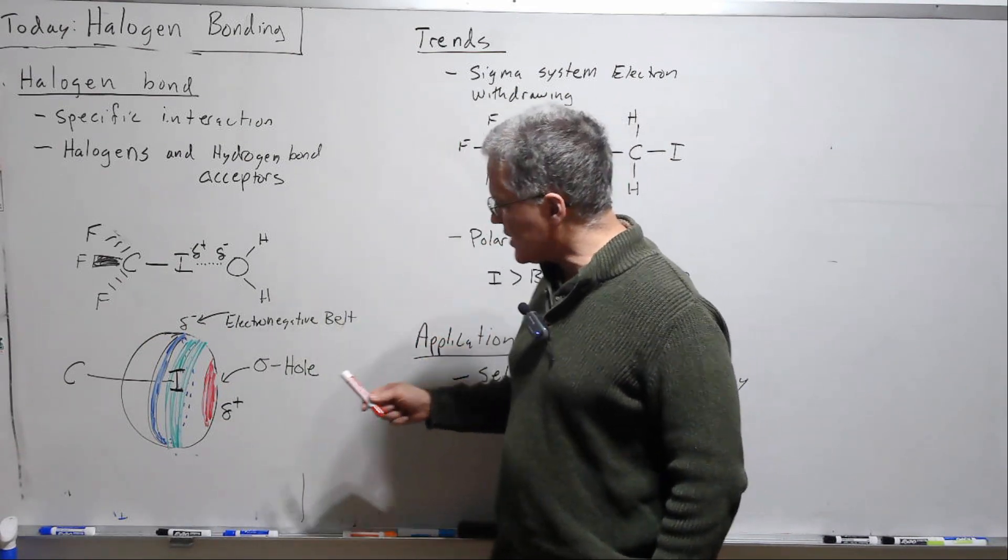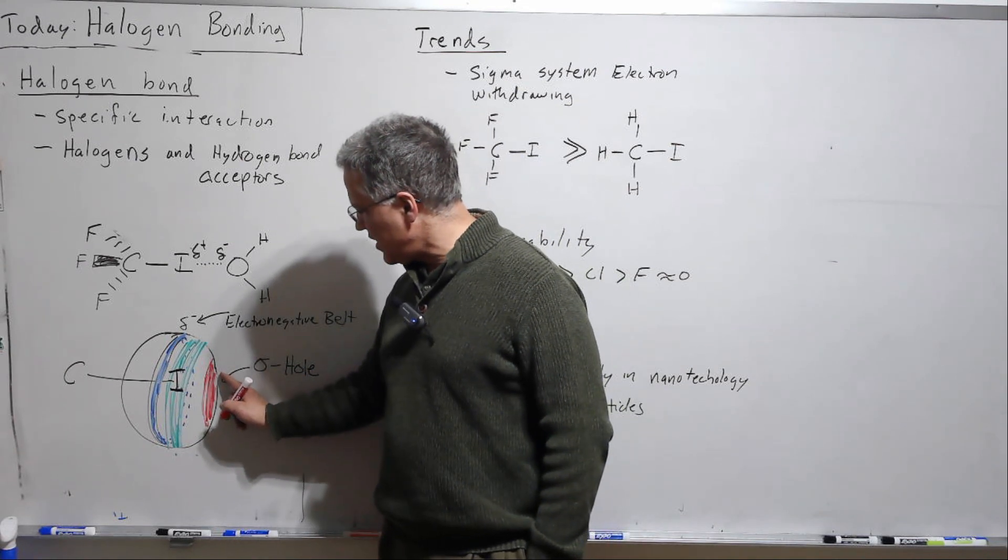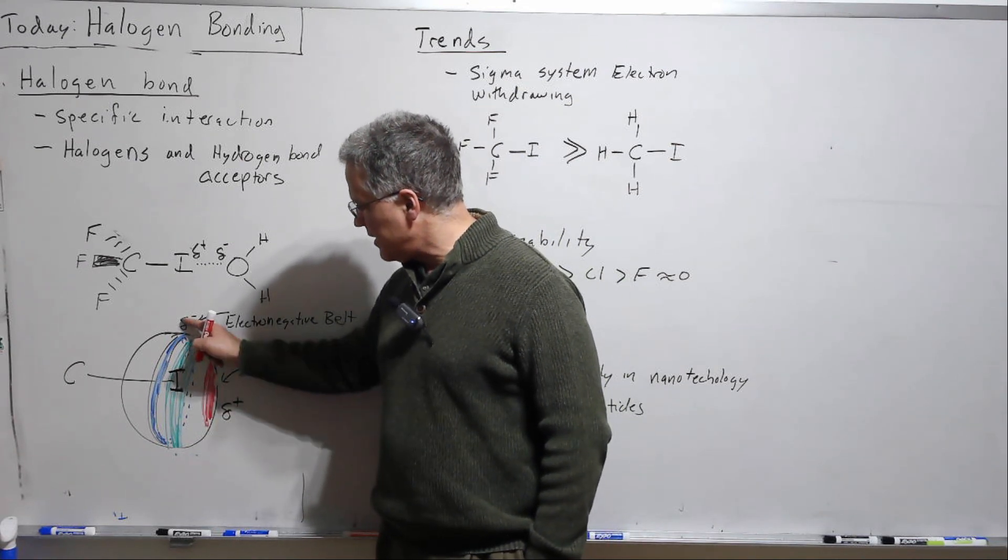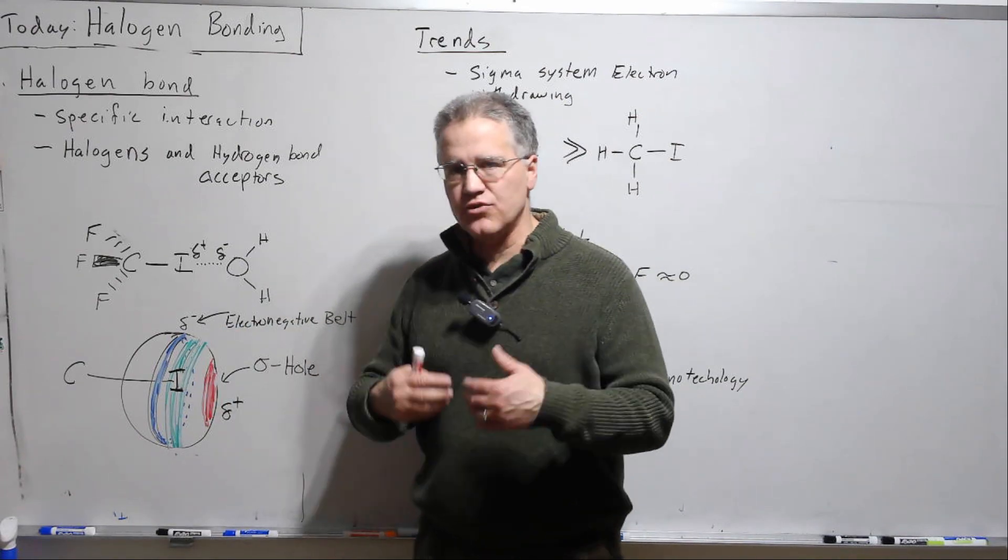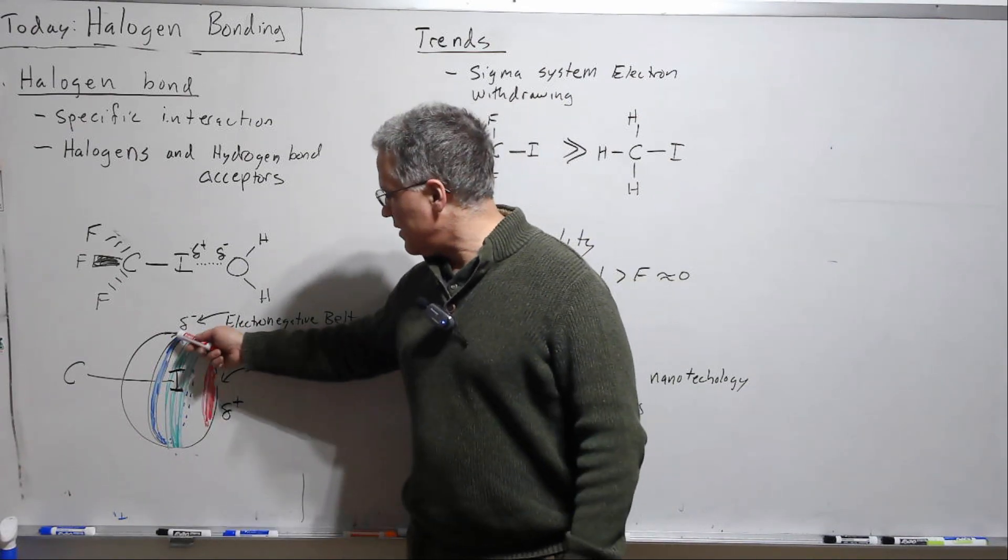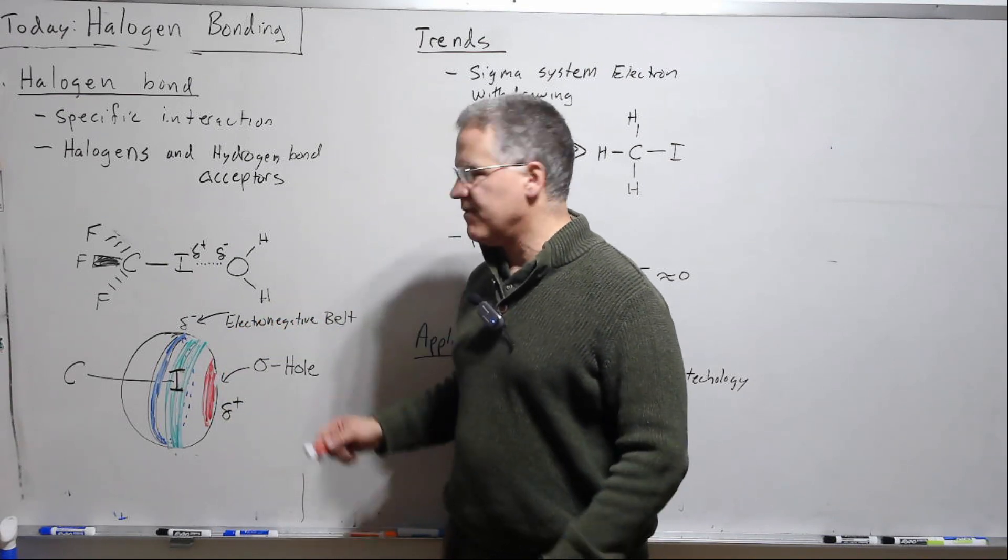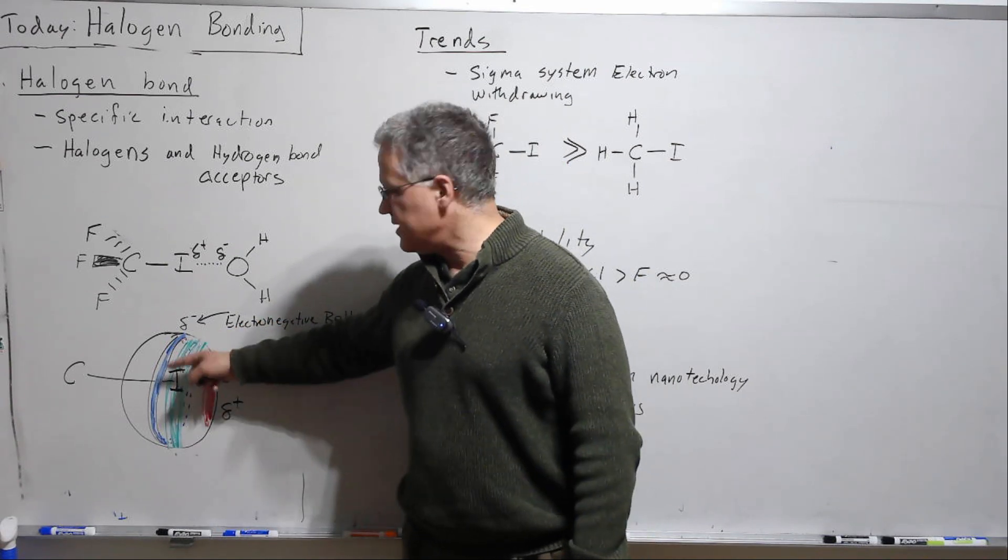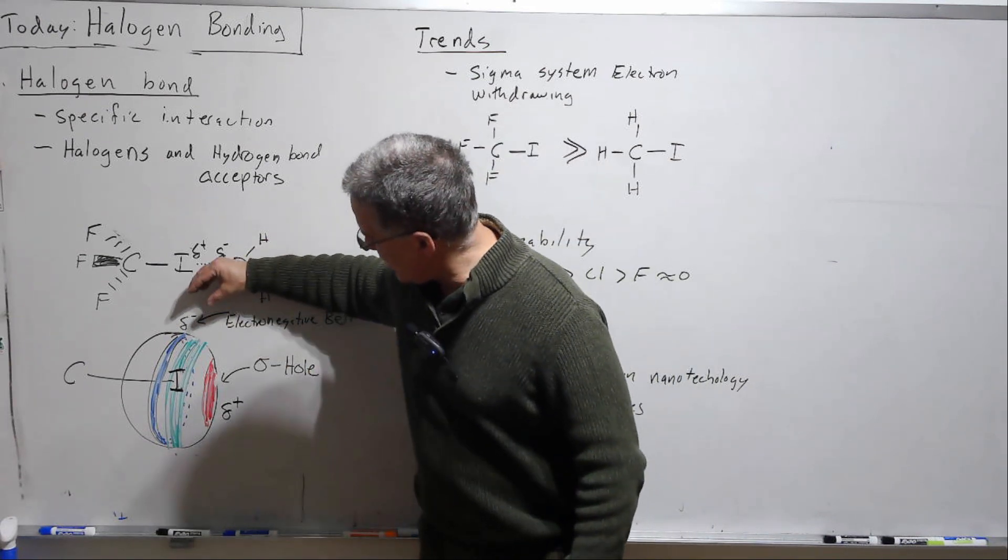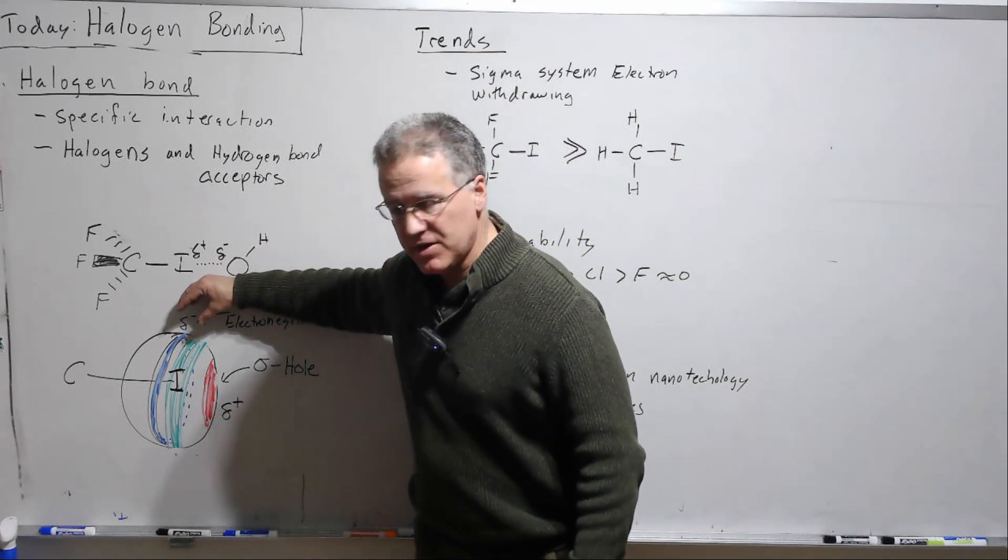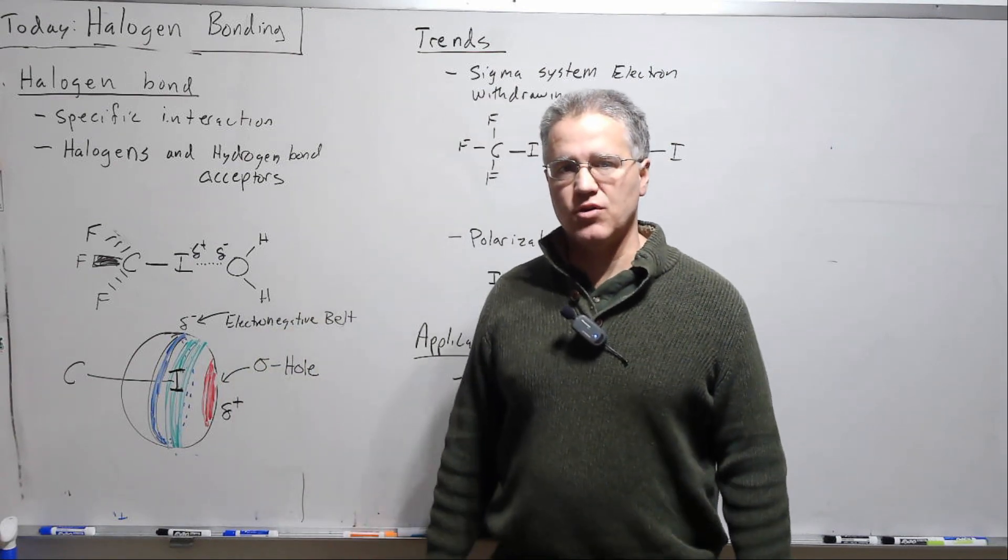But here actually as we start to progress around the top of the iodine, there is a region of electroneutrality and then a region called the electronegative belt that is actually electronegative. And so you have a partial negative up here and the partial positive sigma hole.